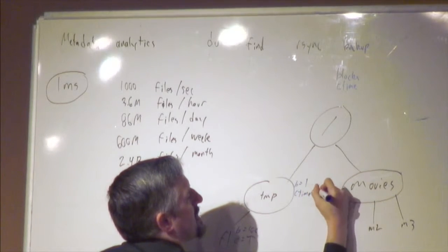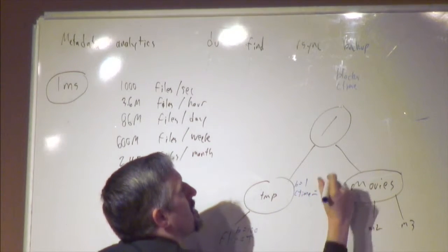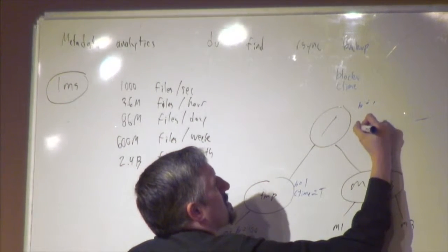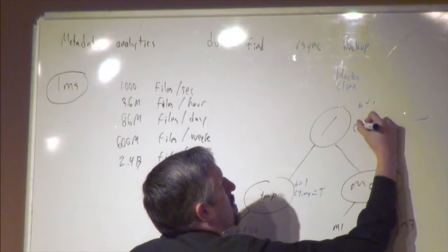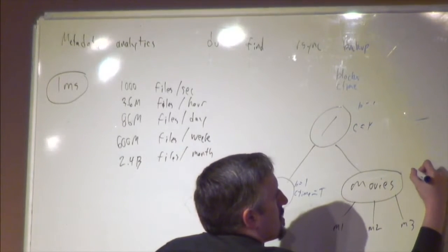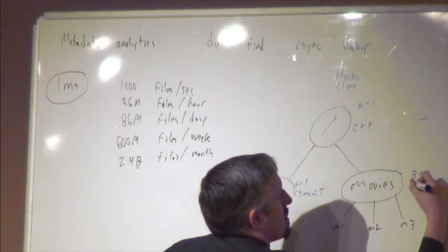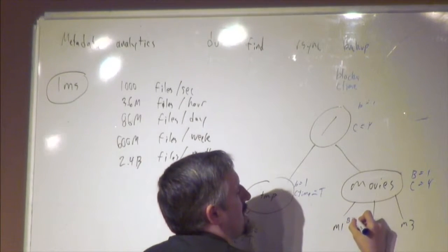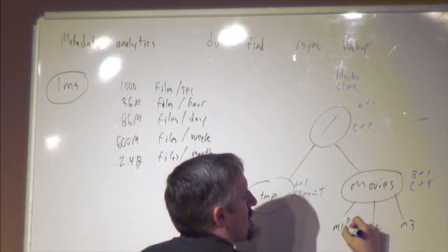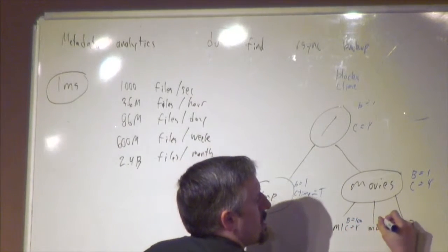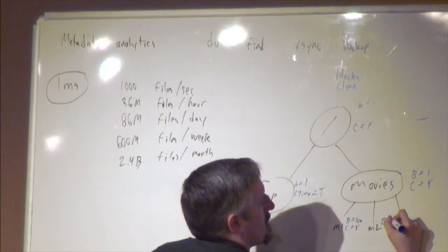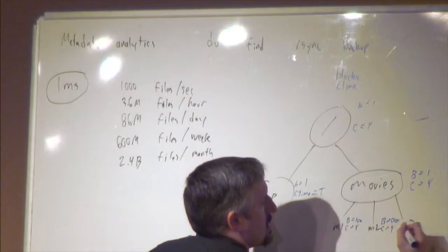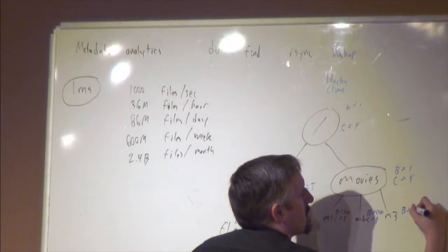Movies will have blocks of one and ctime of yesterday. M1 has one block, ctime yesterday. M2 may have 100 blocks, M3 may have 1,000 blocks, and another may have 1,000 blocks as well.